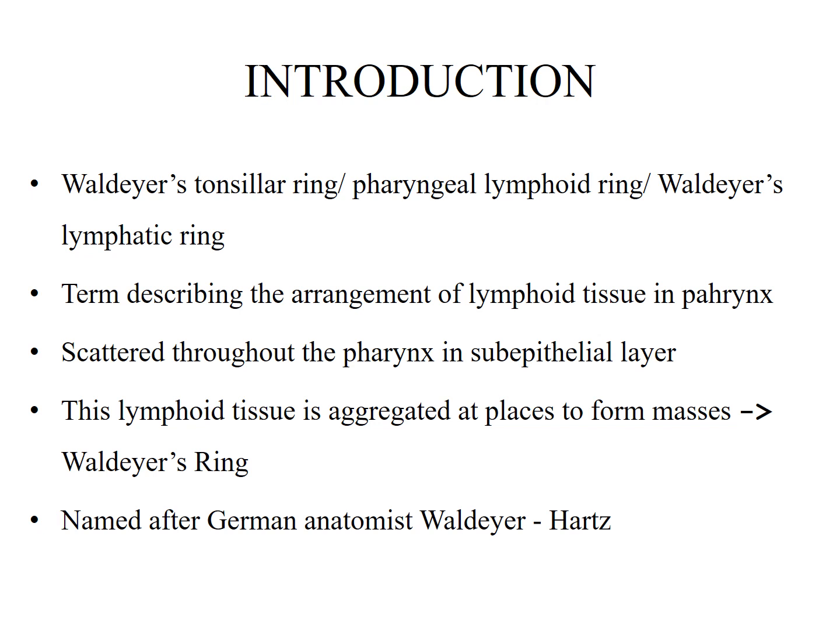Voltaire's ring is also known as Voltaire's tonsillar ring, ranger lymphoid ring, or the Voltaire's lymphatic ring. It is a collection of lymphoid tissue scattered throughout the pharynx in its sub-epithelial layer, mainly in the oropharynx and nasopharynx. It is aggregated at places to form masses, known as Voltaire's ring, and is named after German anatomist Voltaire's Hertz.